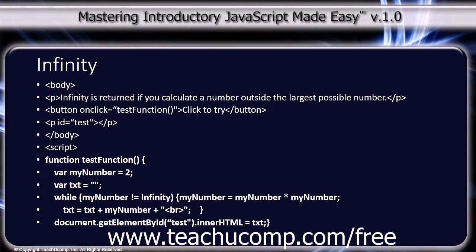document.getElementById("test").innerHTML equals txt, semicolon. Close curly bracket, and finally the close script tag.